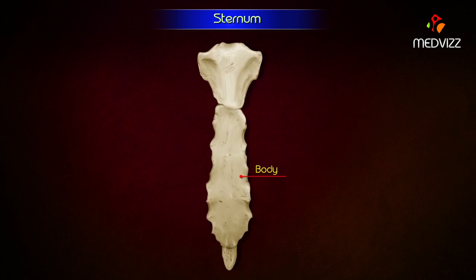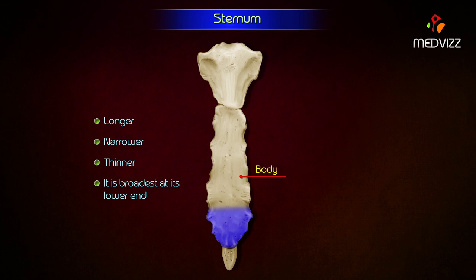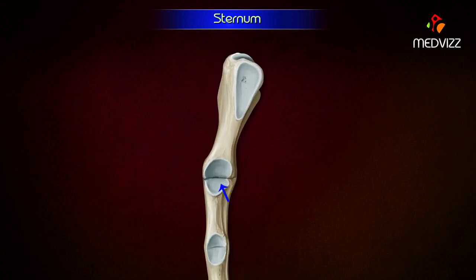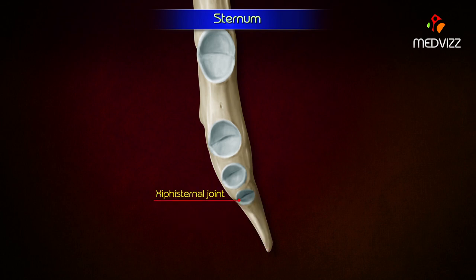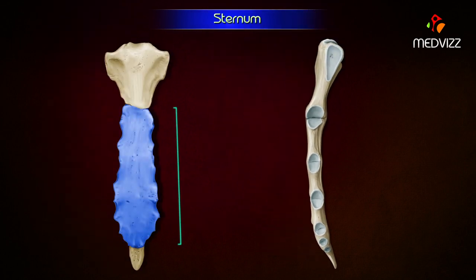Body. The features of the body are as follows. It is longer, narrower, and thinner than the manubrium. It is broadest at its lower end. Its upper end articulates with the manubrium at the sternal angle to form the manubrio-sternal joint. Its lower end articulates with the xiphoid process to form a primary cartilaginous xiphi-sternal joint. Its anterior surface presents three faint transverse ridges, indicating the lines of fusion of four small segments called sternebrae.